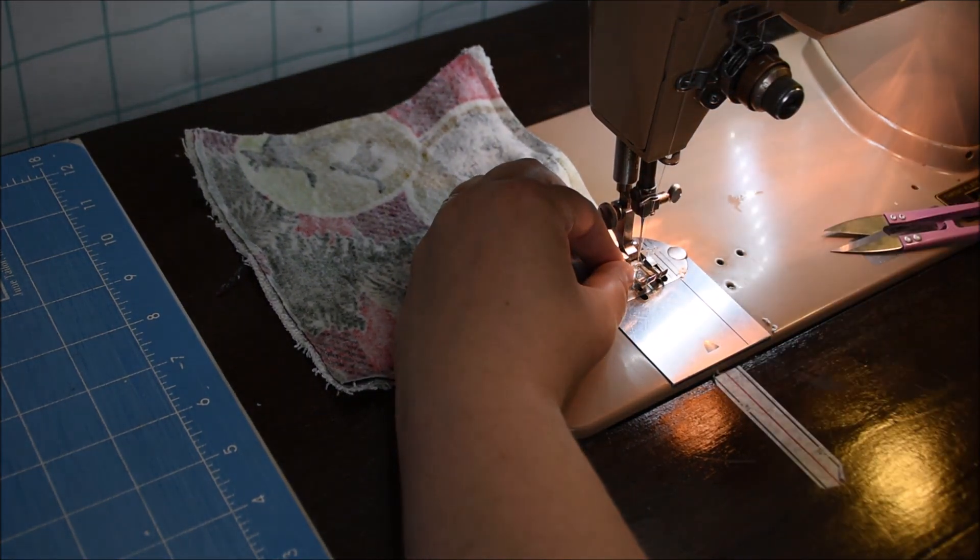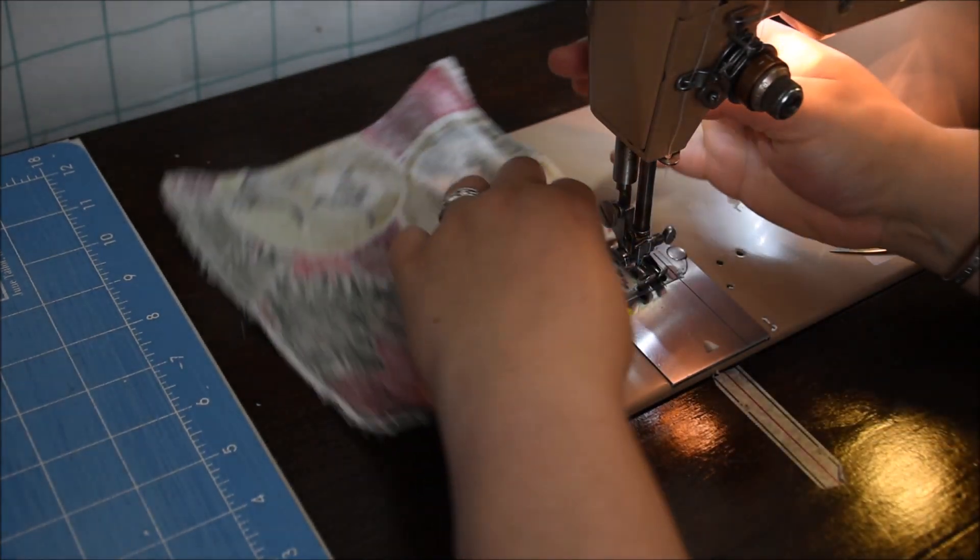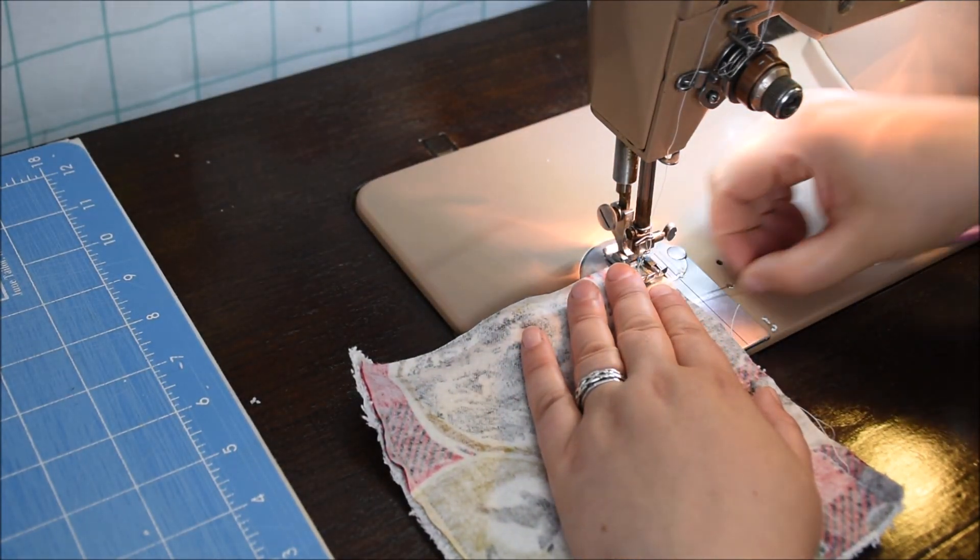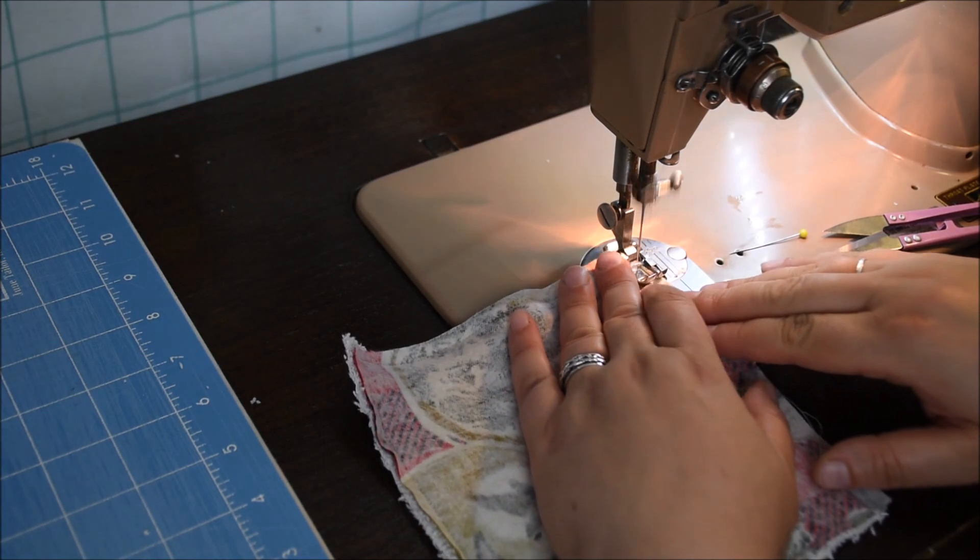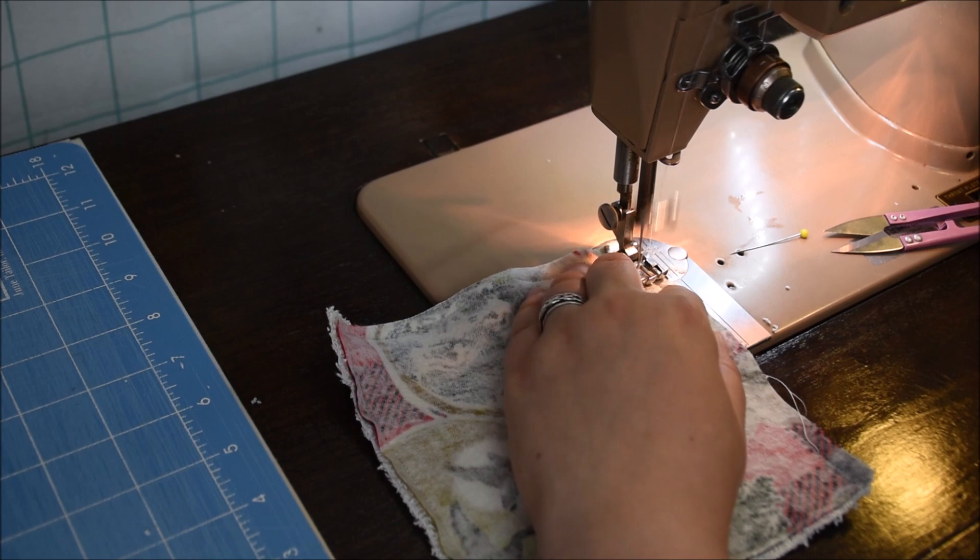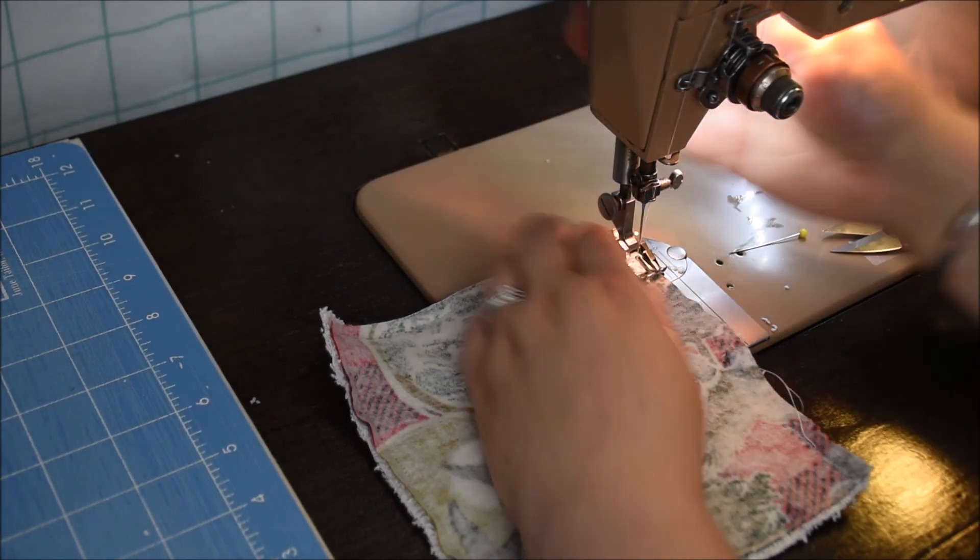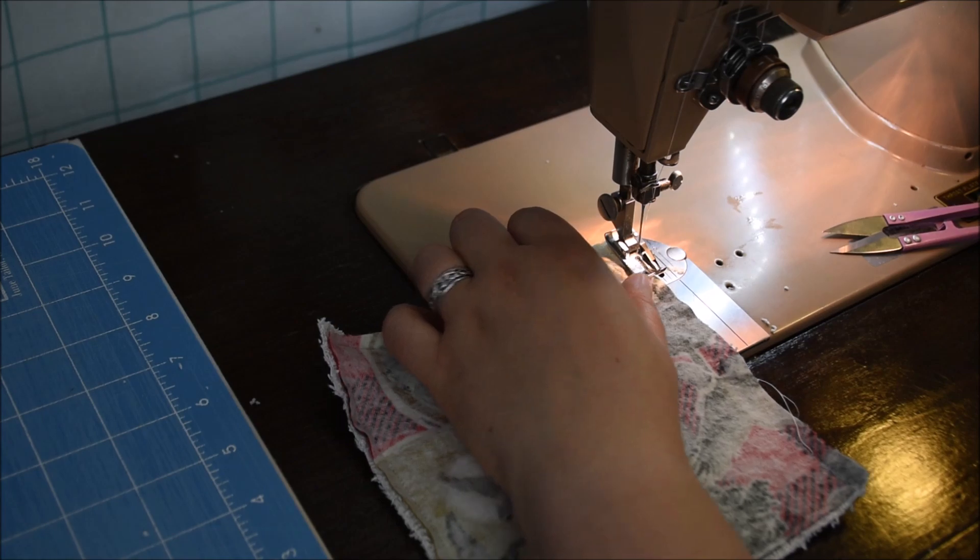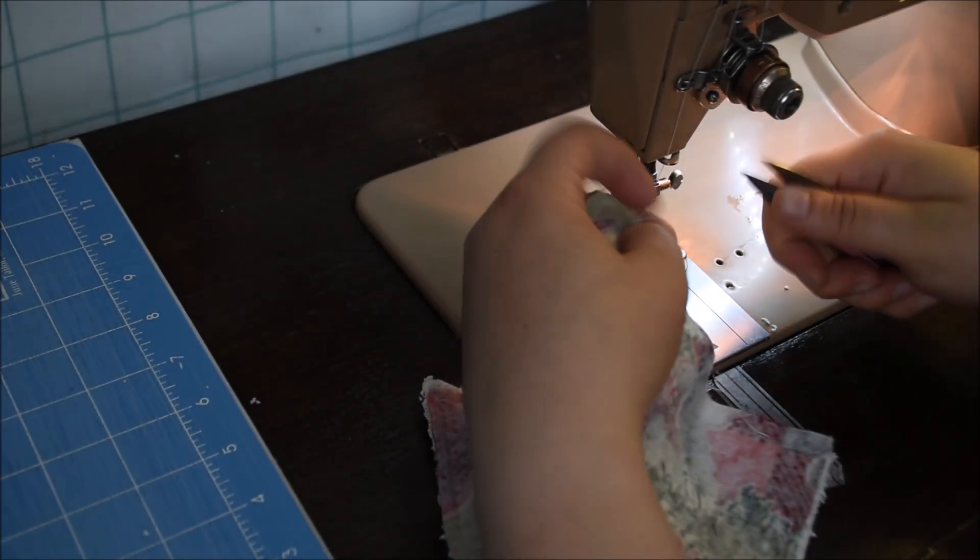So I'm coming up to the end here. Again, needle down, lift the presser foot, turn the work, presser foot back down. Now I'm going to stitch towards where that needle was and then I'm going to put it into back stitch, back stitch a little bit just to secure those threads. Take the work out and trim off those threads.